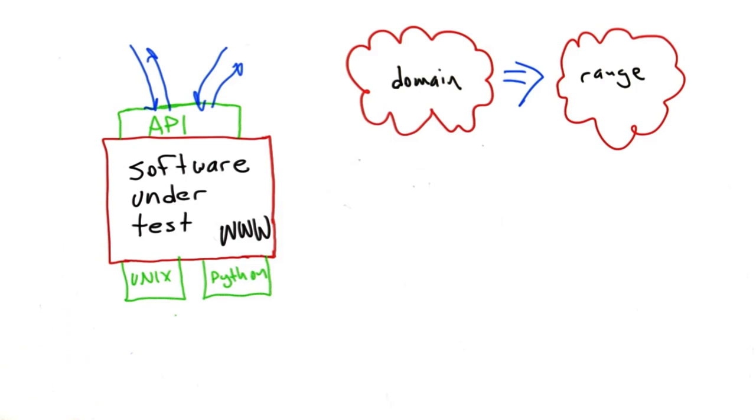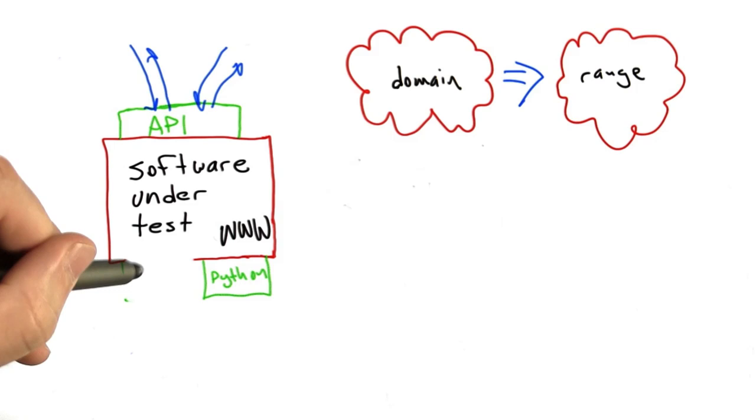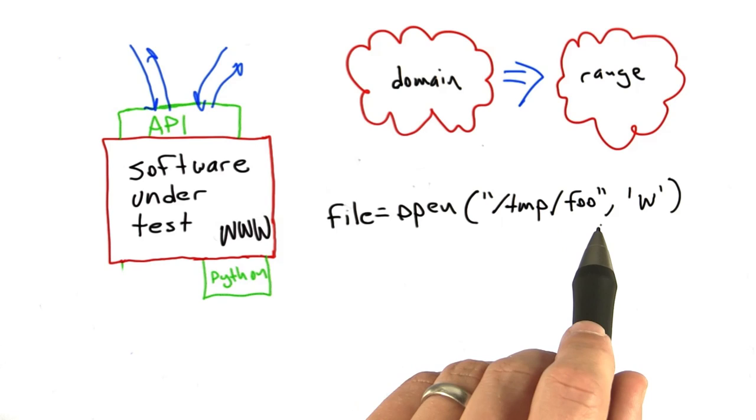Now, from a testing point of view, we can often use a technique called fault injection to deal with these kinds of problems. So let's assume for the moment that we're using the Python library to create a file. So we're going to be issuing a call like open('/tmp/foo', 'w'). That's a path to the file we're trying to open. And 'w' specifies we're opening that file with write permissions.